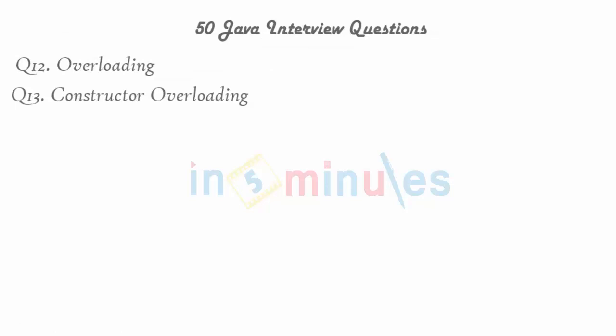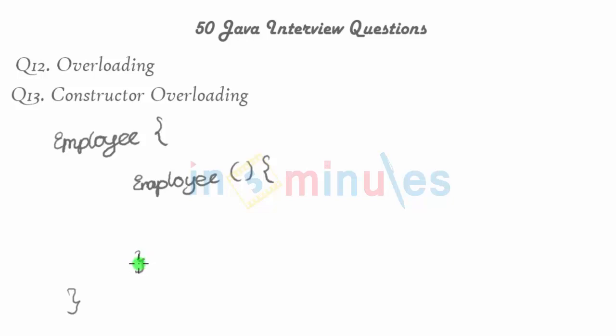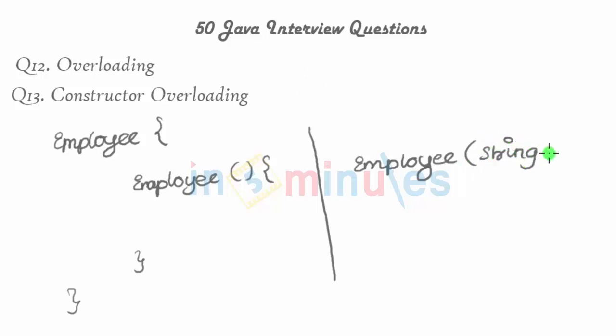Before we conclude, let's talk about constructor overloading. Is constructor overloading possible? Yes, it is very much possible. You can have multiple constructors with different types of parameters or different numbers of parameters. For example, a class called Employee can have various forms of the constructor — since the constructor has the same name as the class, you can have Employee with no parameters as the default constructor, and another that accepts a string location as a parameterized constructor. So yes, constructor overloading is possible, and that's it for this video.